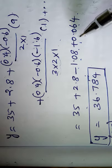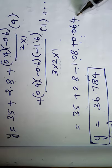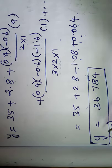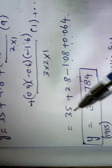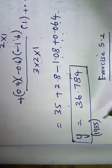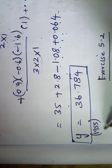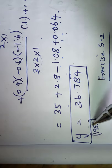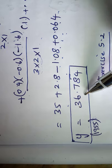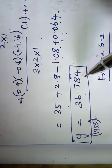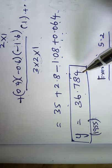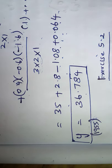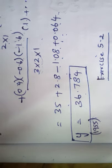Adding all the terms gives the final answer. The estimated population in the year 1955 is 36.784 lakhs.